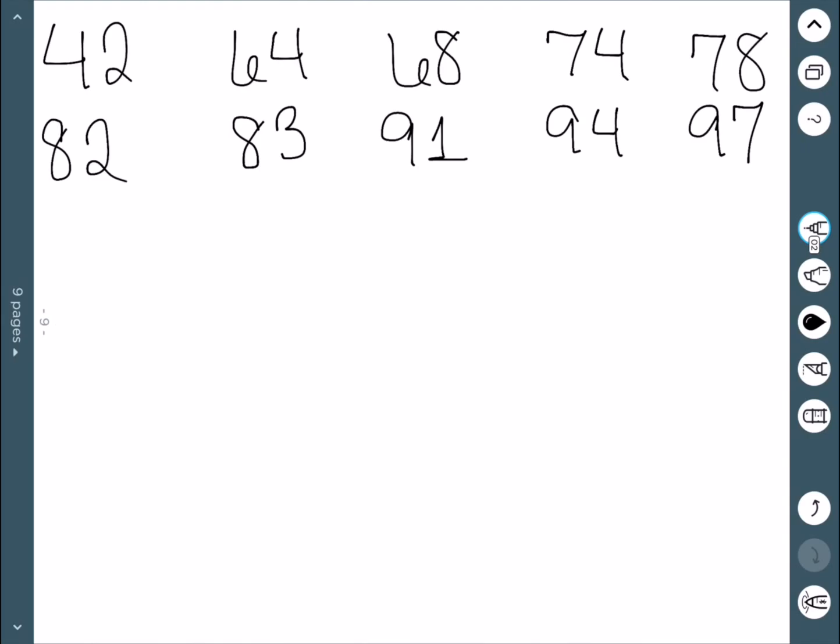Once again, we have our test scores ordered from smallest to largest. The easiest of our three values to find is Q2, which is the median. Here we can see that we have 10 data values, so to find the median, we need to go halfway between the 5th and the 6th, and halfway between 78 and 82, Q2 is 80.